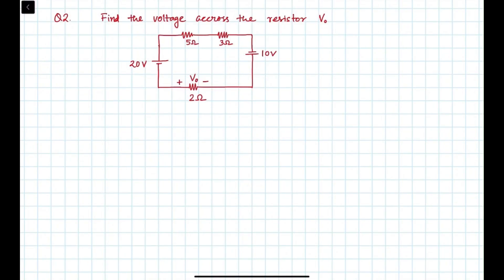Hello everyone, here is the second problem. In this circuit you have to find the voltage V0 which is across the 2 ohm resistor. We all know Ohm's law, that is V equals IR. Now to find the current, I will be using another law which is Kirchhoff's Voltage Law, or Kirchhoff's second law.